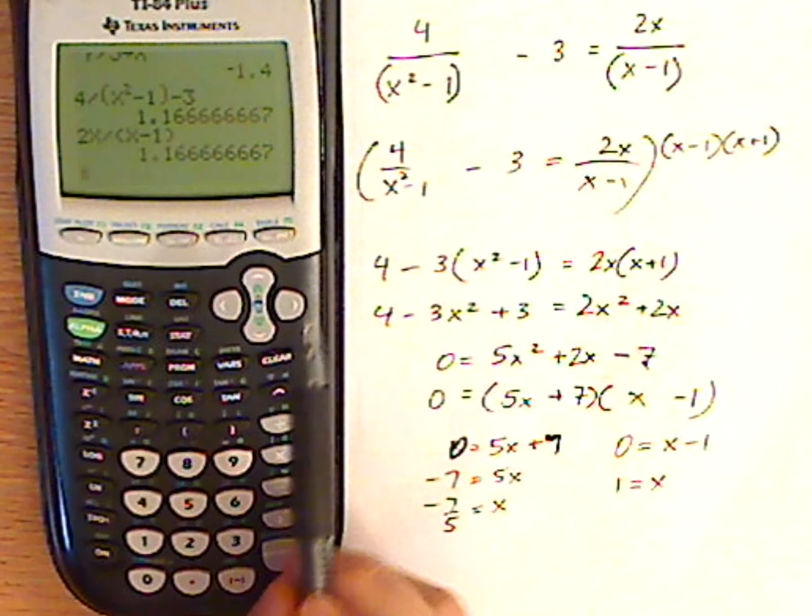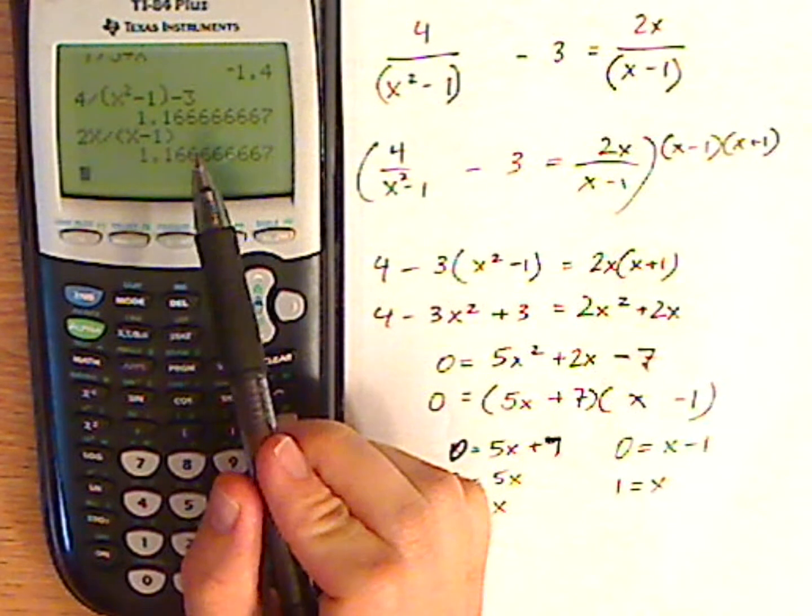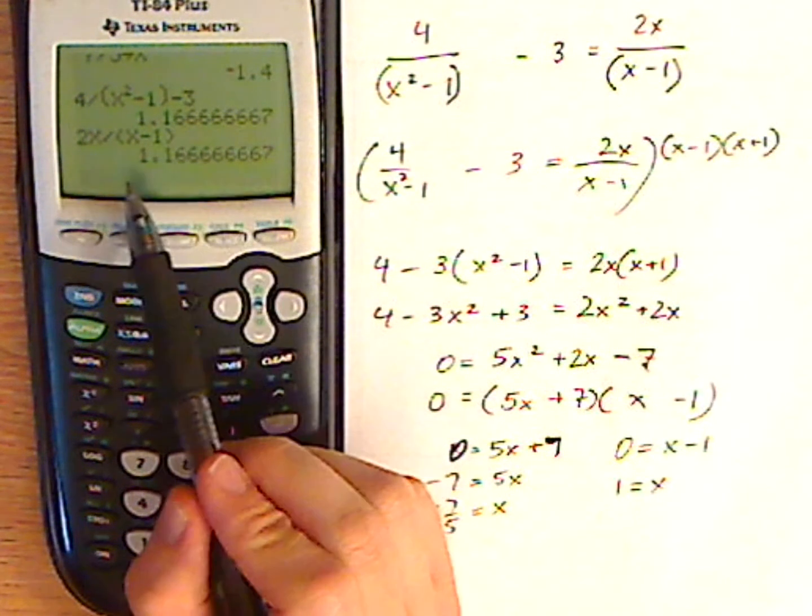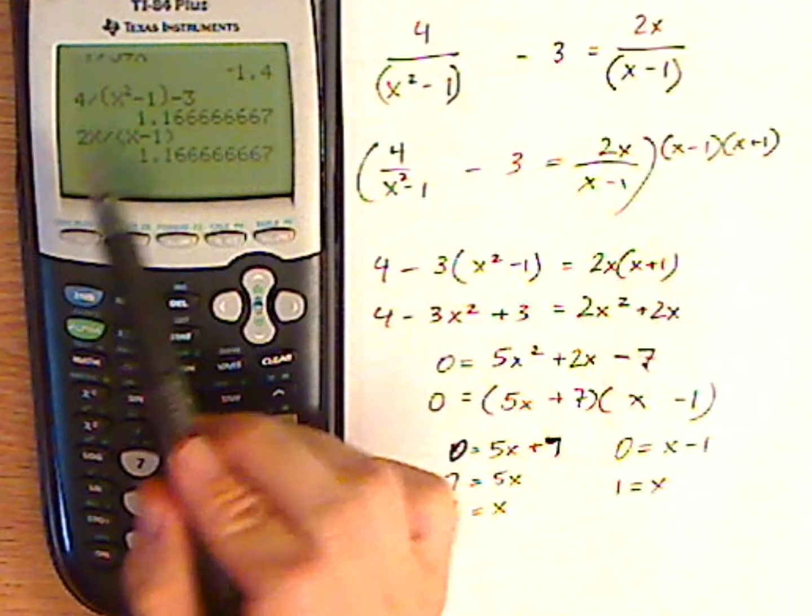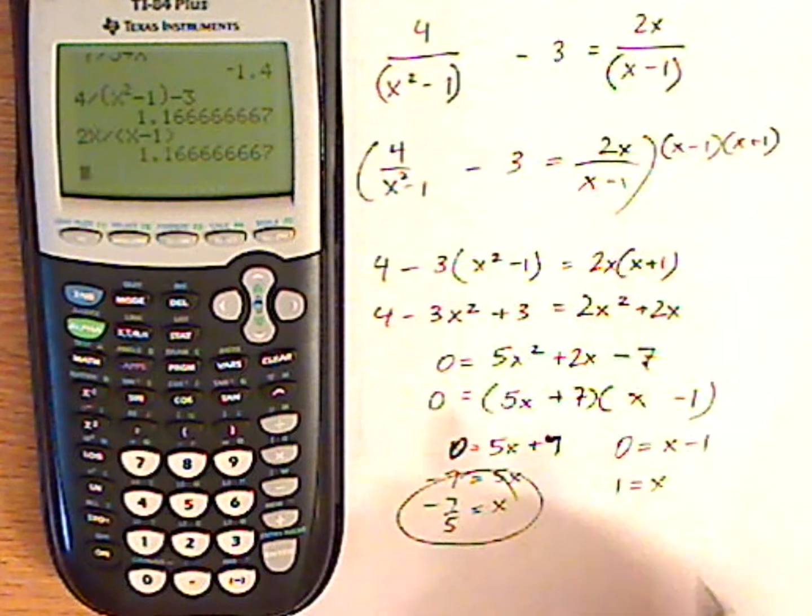Now notice what happens on my calculator, I get 1.16666666, and I get the same thing on the left side as the right side. What that tells me is this is a solution.